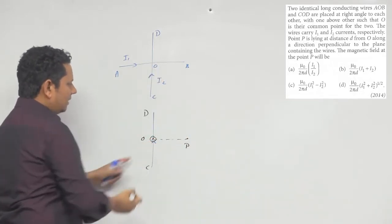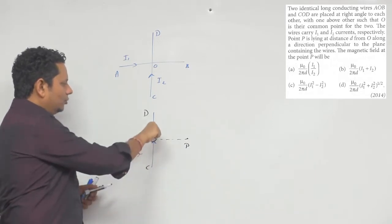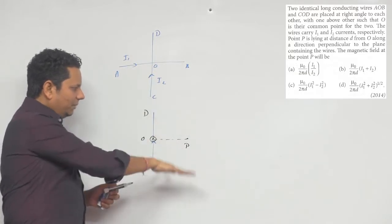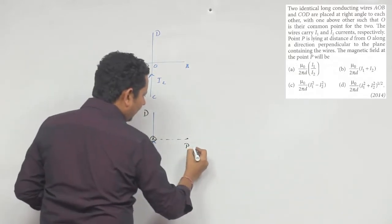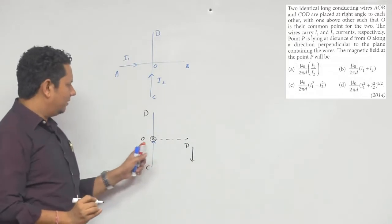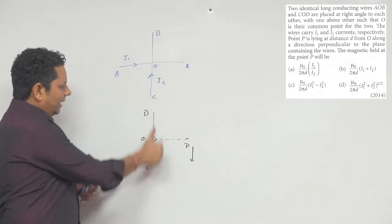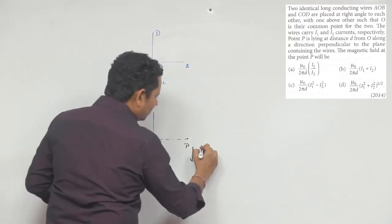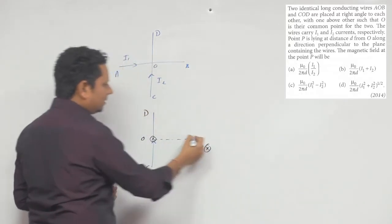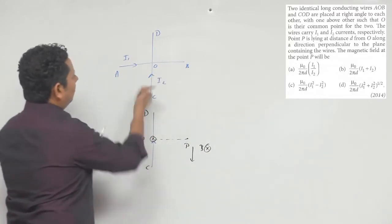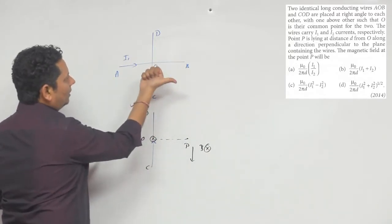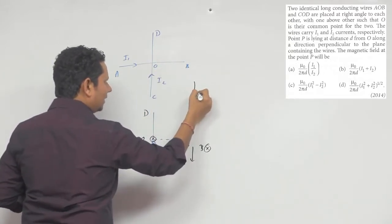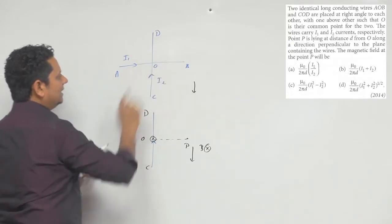दोनों ही scenarios में solve करेंगे तो answer same आएगा। P point यहाँ पर है। ऊपर की direction में magnetic field inside होगी, तो B cross direction में inside हो जाएगी। इस वाले case में देखेंगे तो magnetic field — यह आपका point है — current carrying wire होने से इस side magnetic field होगी।